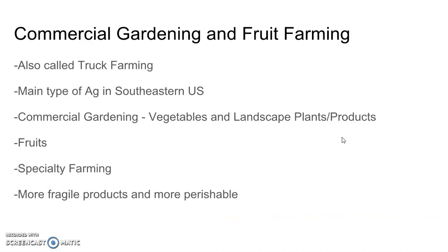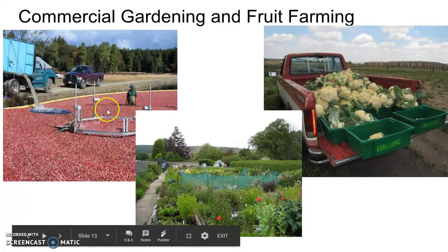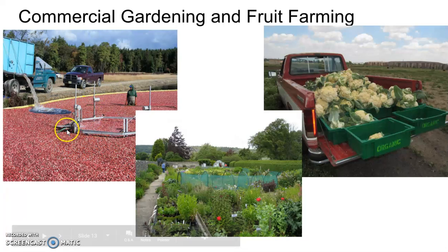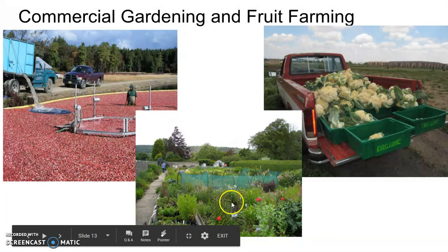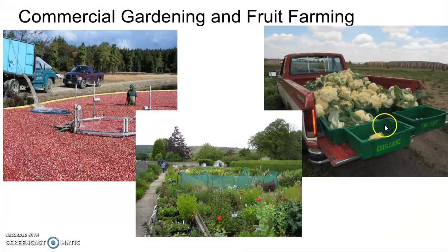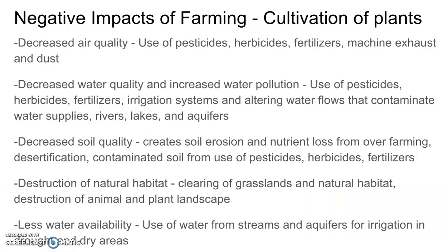Finally, let's talk about commercial gardening and fruit farming, also called truck farming — the main type of agriculture in the southeastern United States. It's called truck farming because products were typically delivered on the flatbed of a truck, or sold directly from the flatbed in boxes. These are vegetables, landscape plants, fruits, and specialty farming — it's a more fragile and perishable product. The pictures show cranberry farming in a bog in Maine, a landscape plant nursery, and cauliflower being loaded onto the flatbed of a truck for delivery to market.